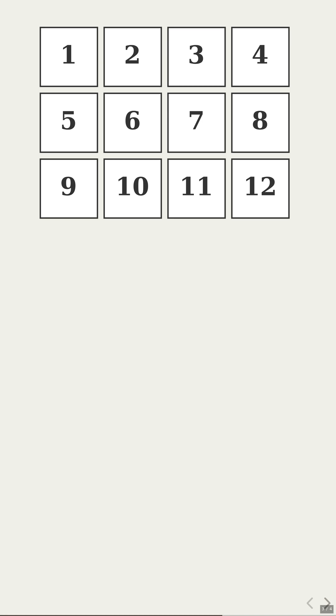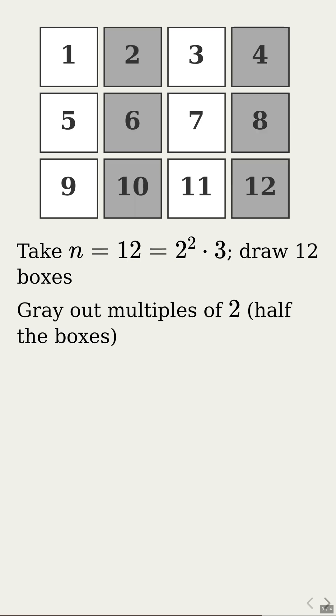Let's see the product formula in action with n equals 12, which is 2 squared times 3. Draw 12 boxes for the numbers 1 through 12. First gray out every multiple of 2. You just removed one half of all boxes. So that's the 1 minus 1 over 2 factor kicking in? Exactly.